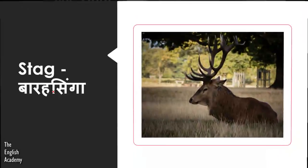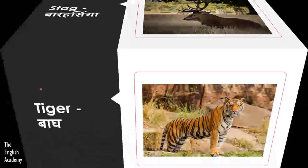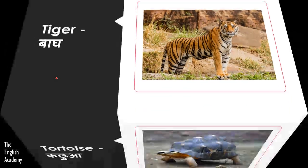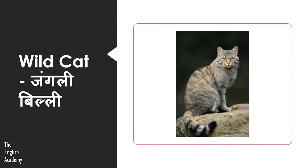The next animal is Bara Singa, known as Stag. Next animal is Baag — Baag is known as a Tiger. Next animal is Kachua — Kachua we call Tortoise. Then there is Jungli Billi, known as Wild Cat.